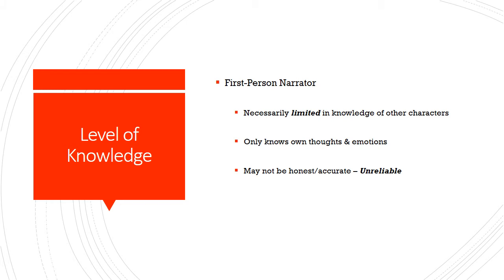This has repercussions for the narrator's level of knowledge. If it's a first-person narrator, by necessity they're limited in what they know of other characters. Just like we only know our own thoughts and emotions, a first-person narrator can only know their own thoughts and emotions — not the thoughts and emotions of the other characters. They only know what other characters say or do or how they look, not what's going on inside. Also, a first-person narrator may not be entirely honest or accurate — they may be what we call unreliable.